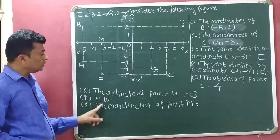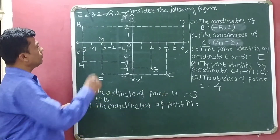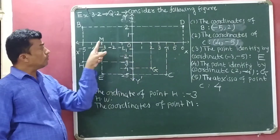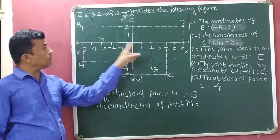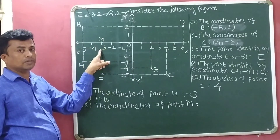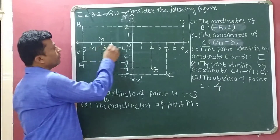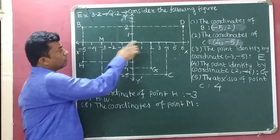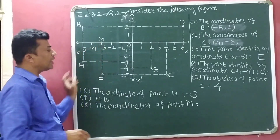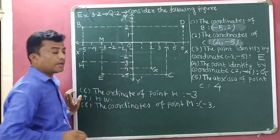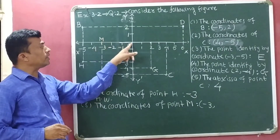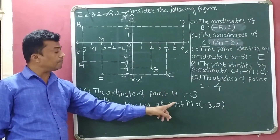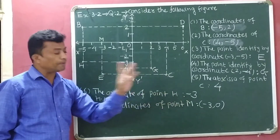Seventh, the coordinates of point N. Point N is available at minus 3 on the x-axis. So, the x-coordinate of point N is minus 3. For a point lying on the x-axis, the y-coordinate is 0. So, the coordinates of point N are (minus 3, 0).